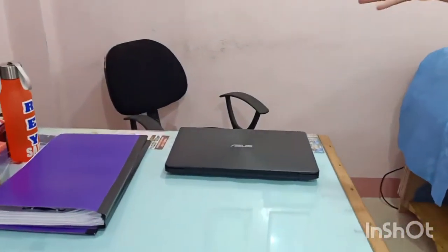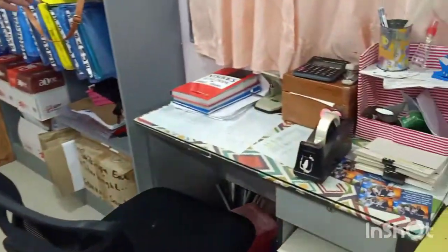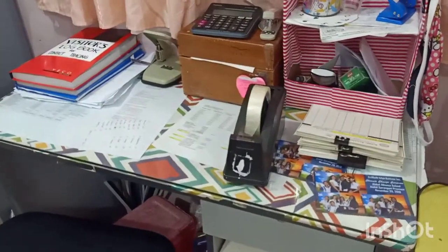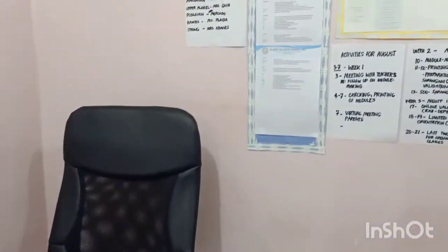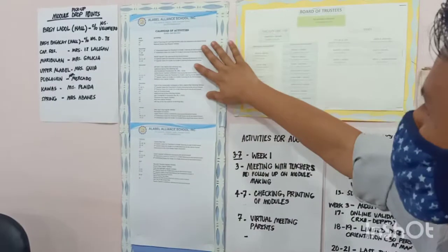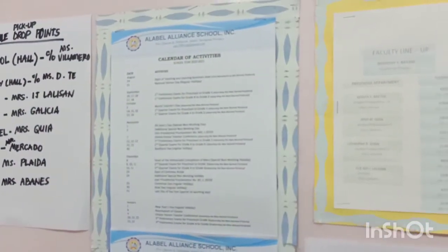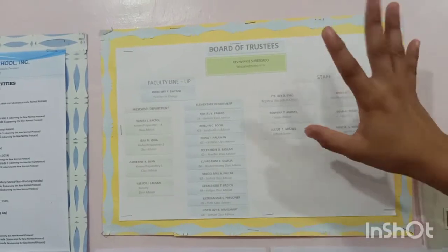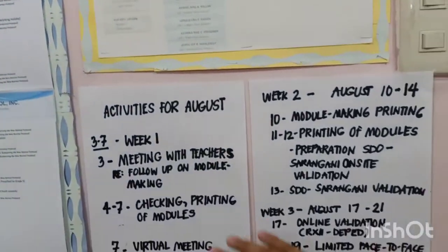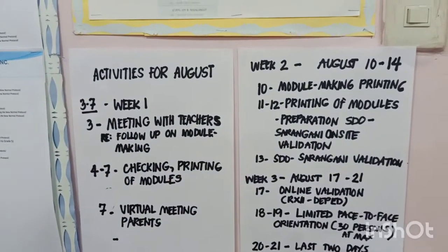This is the registrar's desk, and then this is our cashier's desk. Here is our administrator's or principal's desk. As we can see here, the calendar of activities for school year 2020-2021, the faculty lineup and organizational chart of the school, and the list of activities for the month of August.